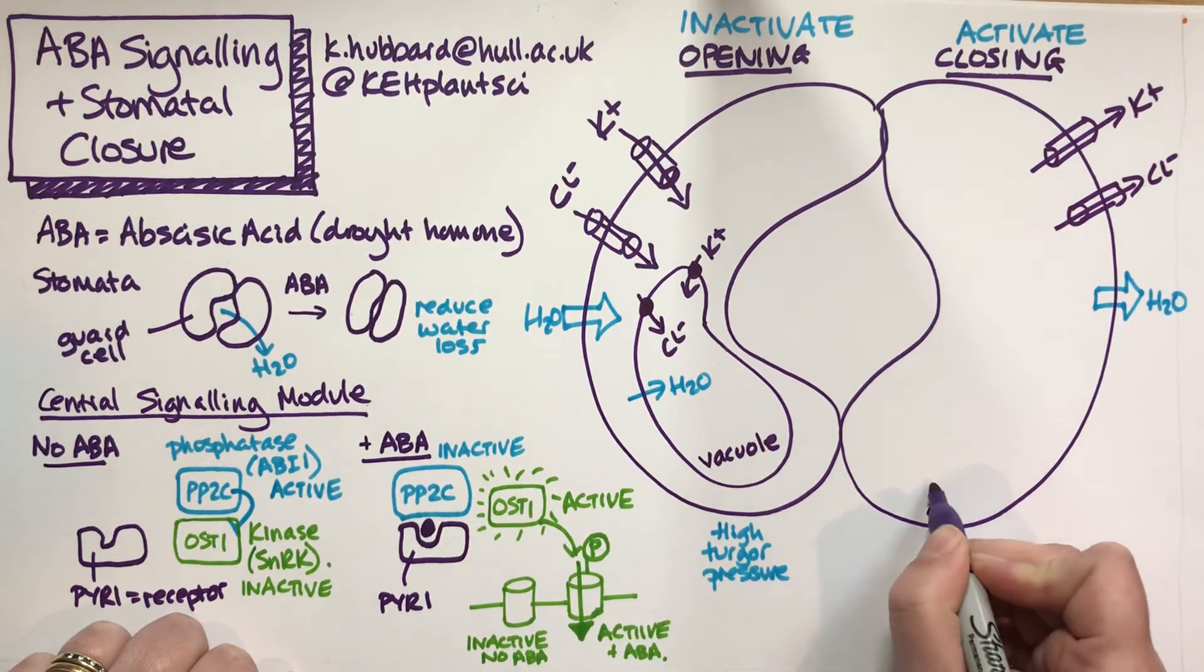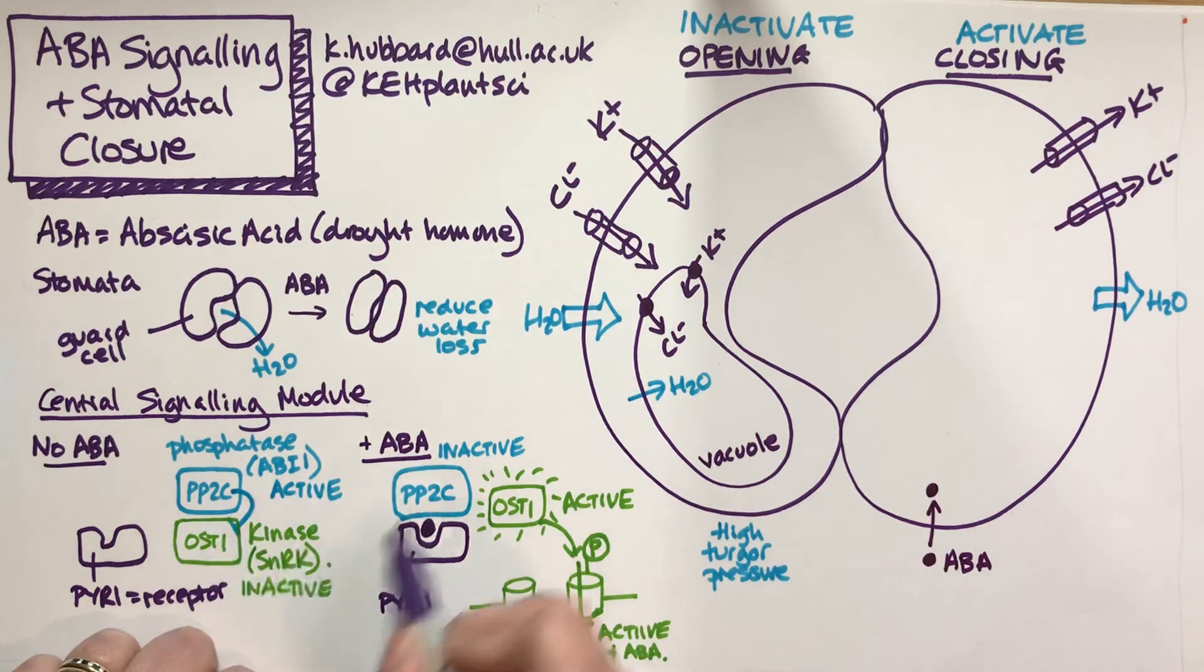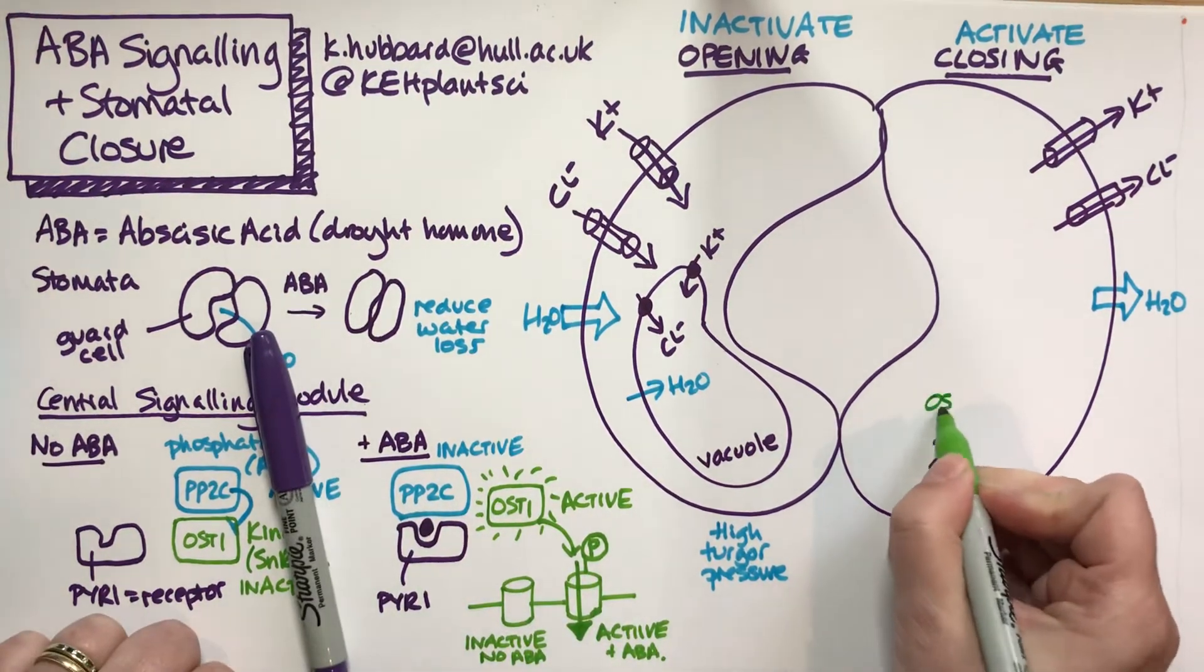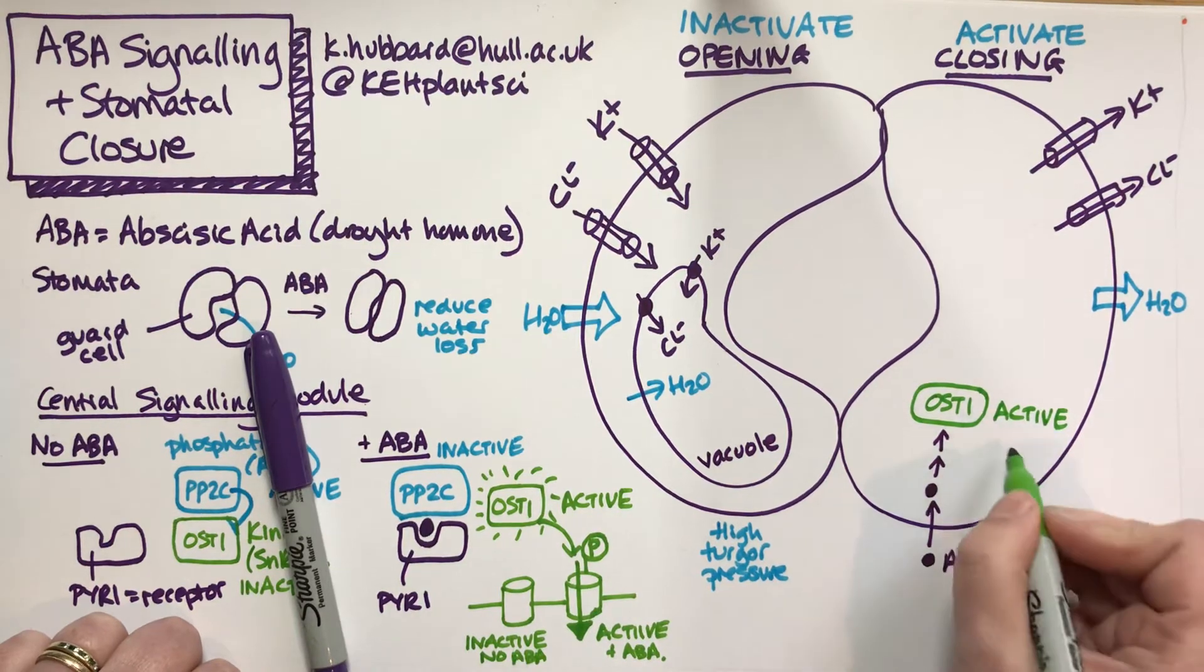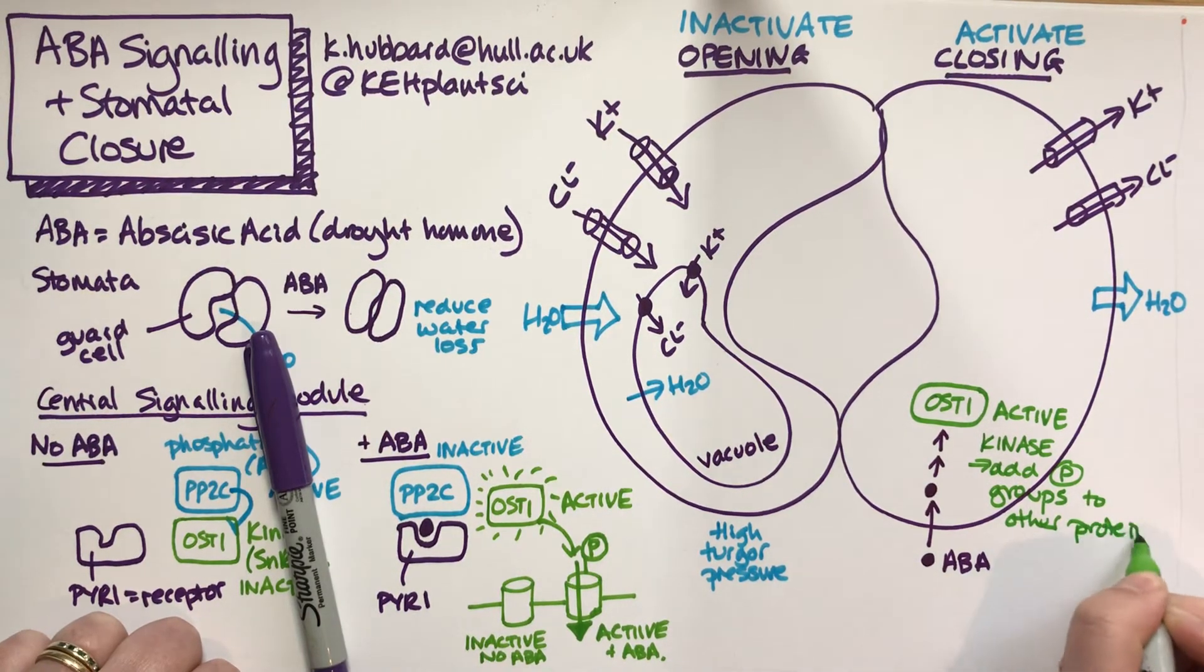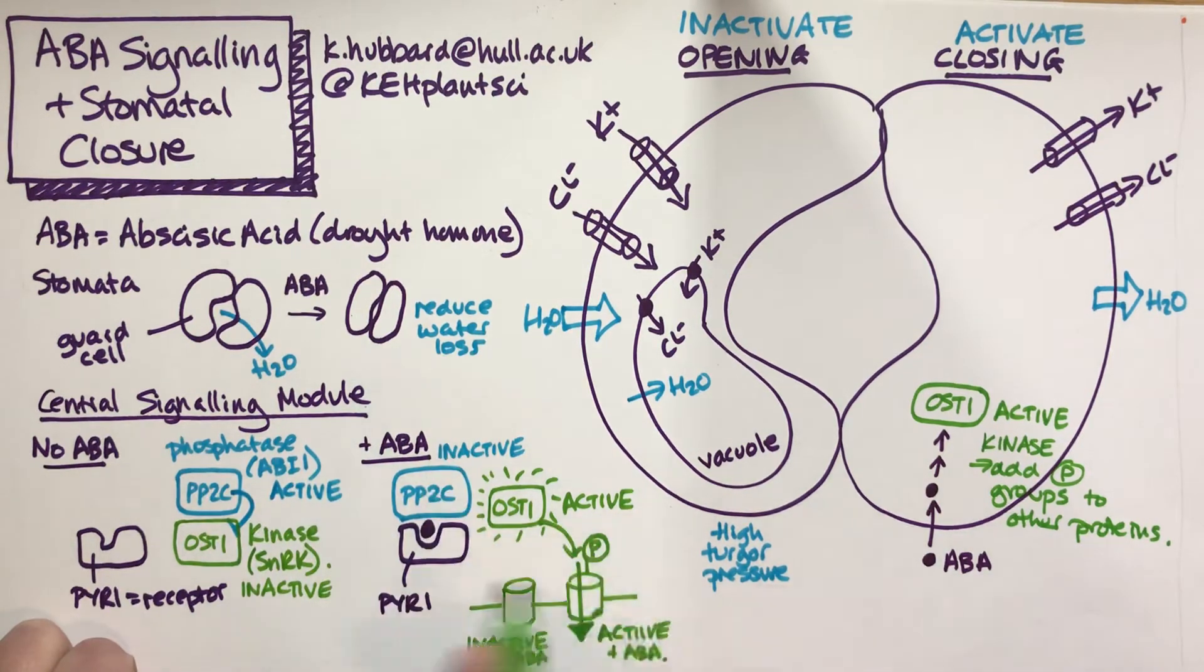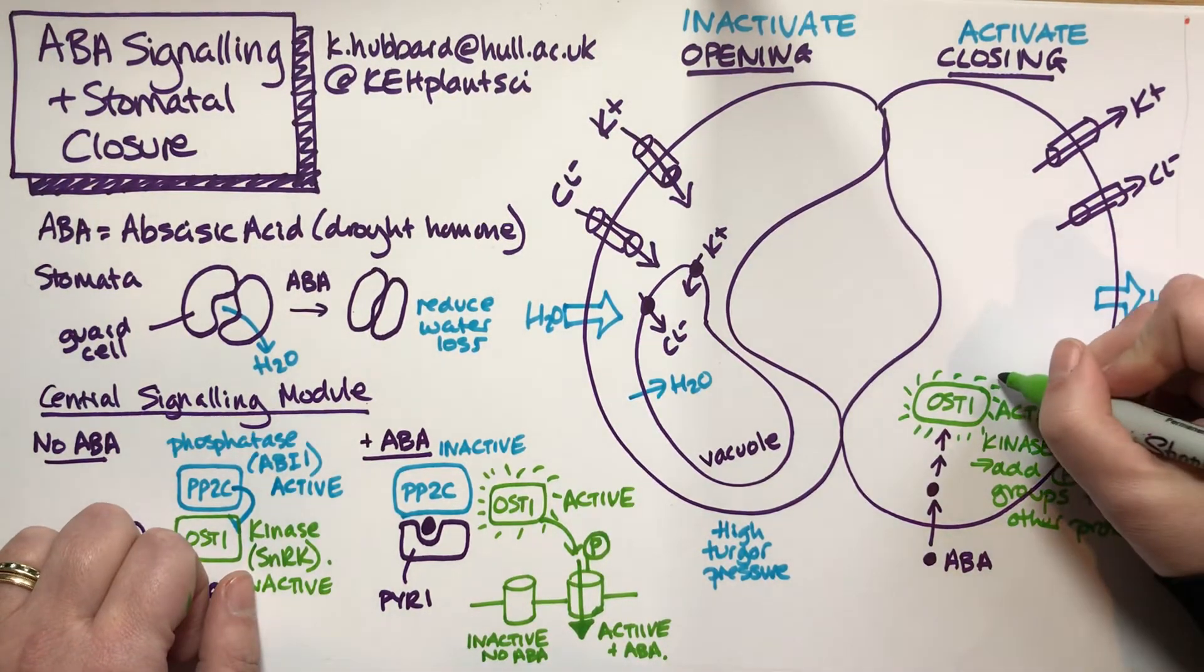Let's think about how that works. We start off with ABA that goes into the cell. Through the processes I've just explained, as a result of ABA signaling because of PYL1 and PP2C, we end up having OST1 active. It's a kinase, so it will go and add phosphate groups to other proteins. OST1 gets activated as a result of this signaling module, so via PYL1 and PP2C.